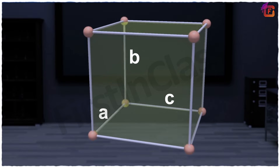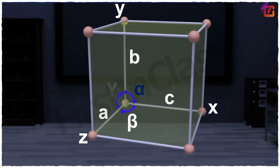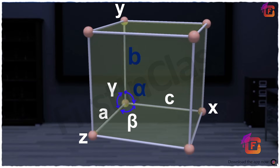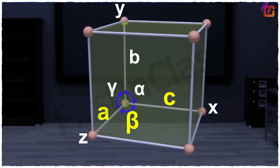The three edges may be mutually perpendicular or may not be. The angles between these sides are named as alpha, beta, and gamma. Alpha is the angle between edge b and edge c. Beta is the angle between edge a and edge c, and gamma is the angle between edge a and edge b.